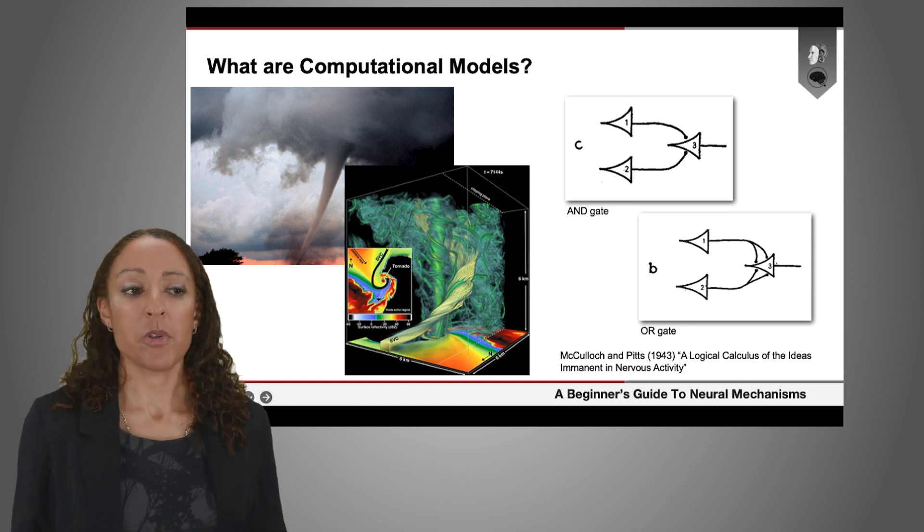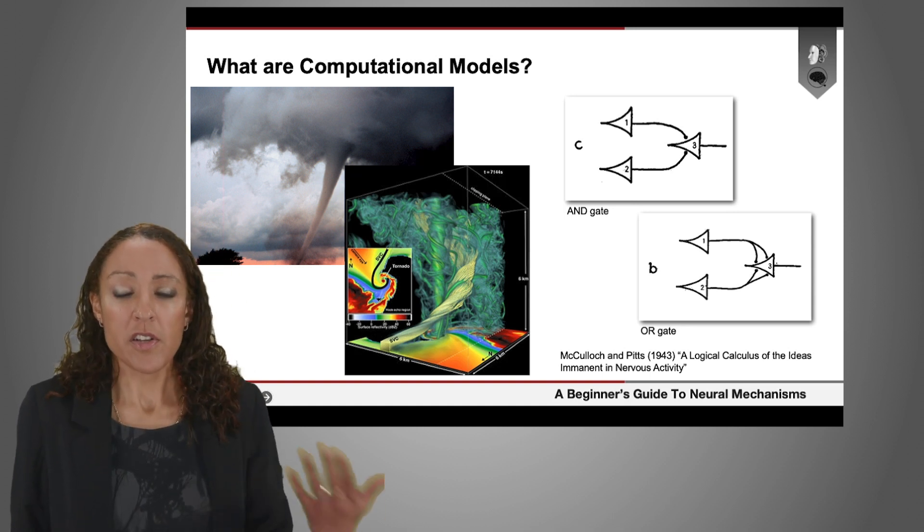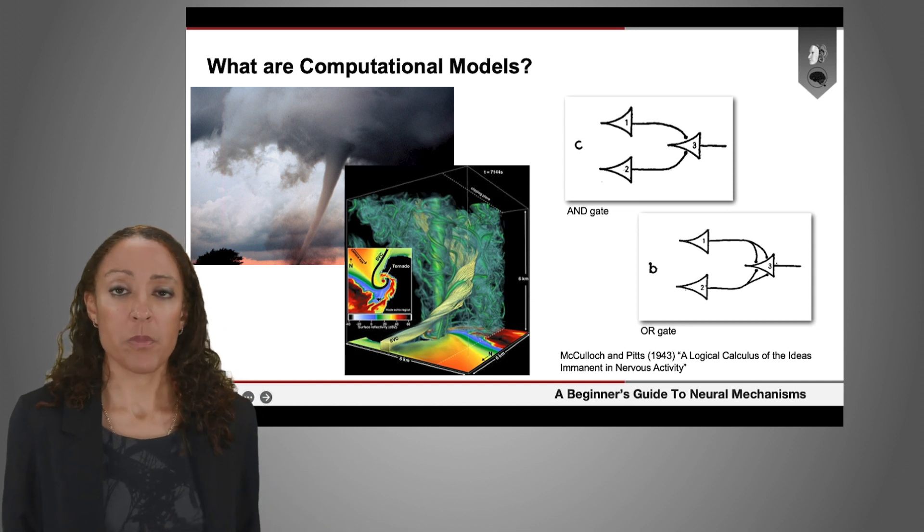And so if you can say, well the brain itself is a biological computer, you can explain why a physical system like the brain ultimately gives rise to cognition.